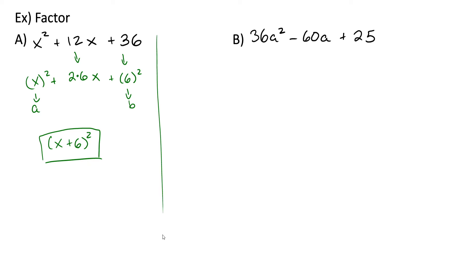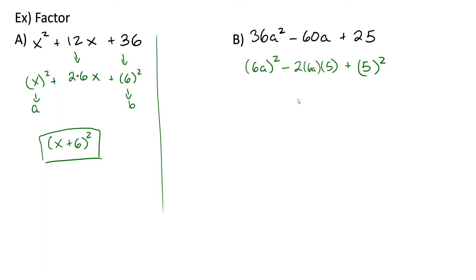For part b, I would suggest pausing the video and trying to work through it on your own. Here we can rewrite 36a squared as 6a in parentheses squared, and 25 as 5 squared. Now let's check negative 60a: we want it to be minus 2 times 6a times 5, and multiplying negative 2 times 6a times 5 does give negative 60a. So this is a perfect square trinomial, and because our 2 is negative it's a difference, giving us 6a minus 5 squared.